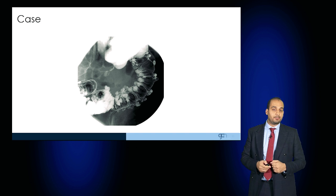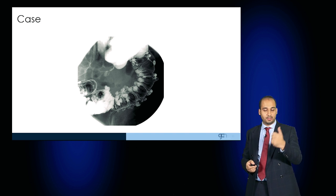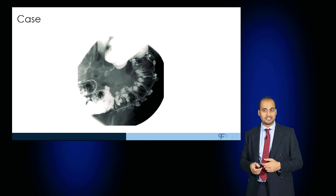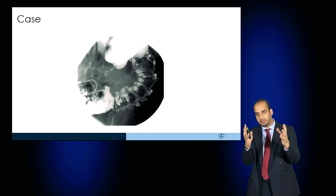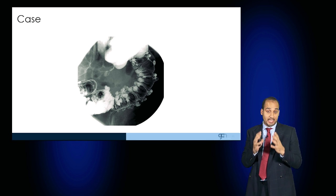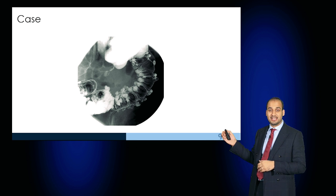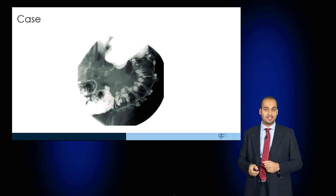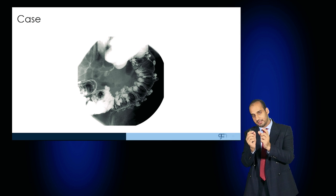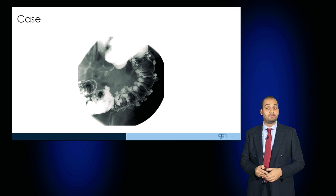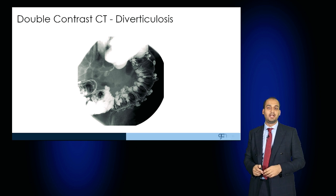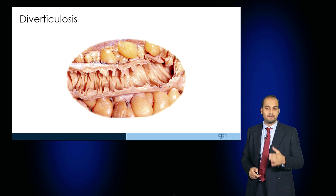This is a double contrast enema — one contrast is air and the second contrast is barium. You can see a beautiful 3D illumination of the colon, and these outpouchings where the contrast is aggregated are suggestive of diverticulosis. And here is a post-mortem specimen of multiple diverticulae.